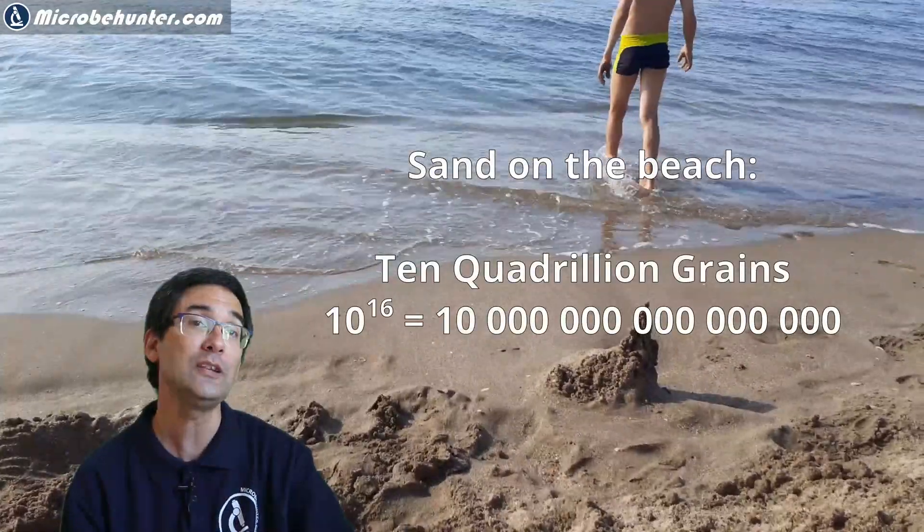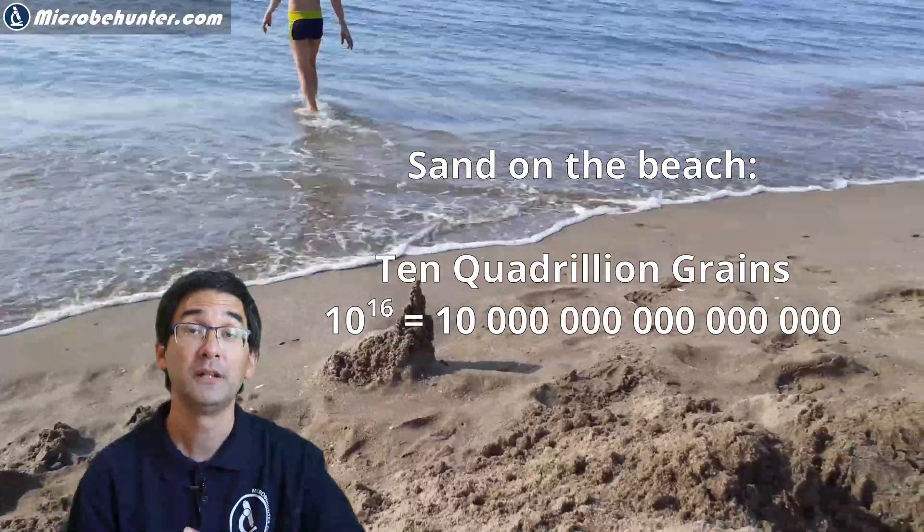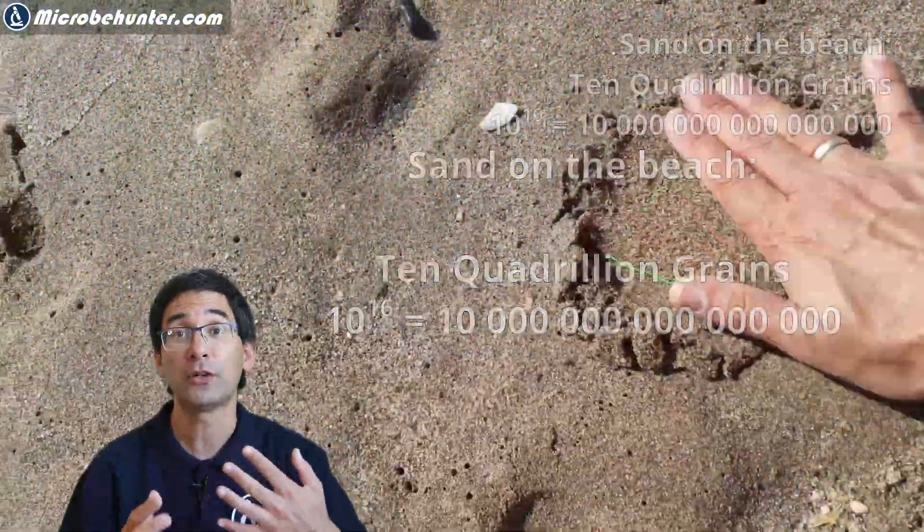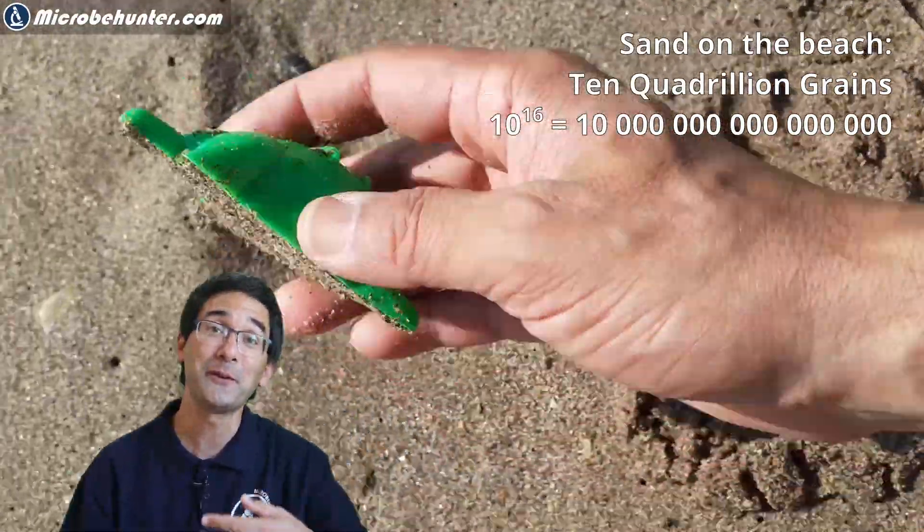It's a large number as we all expect. How many sand grains can you find on this beach? Well, approximately, we all waited for this, that's 10 to the power of 16. That's a large number. It's so large that it's kind of difficult to compare to anything else.